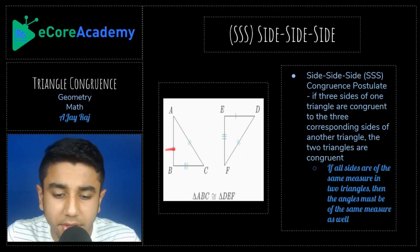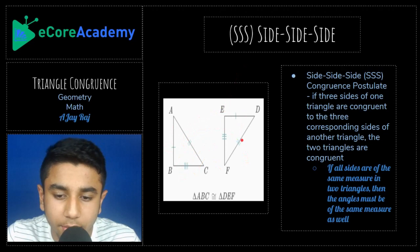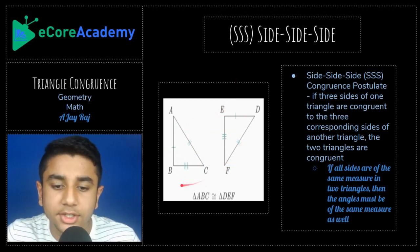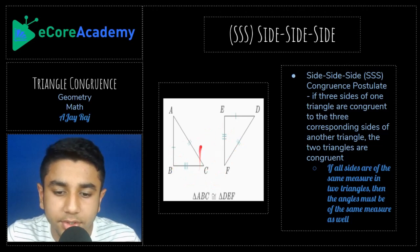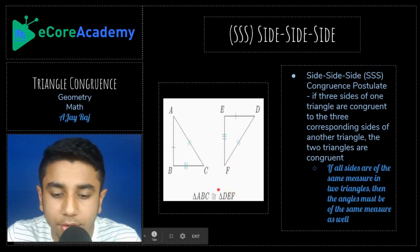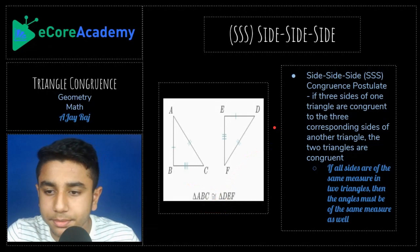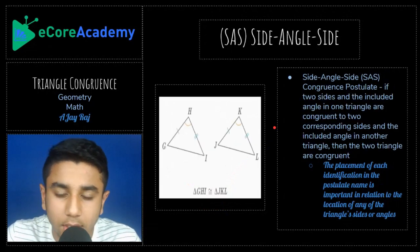The tick marks on the diagram represent congruence: one dash is congruent to the other triangle's one dash, two dashes to two dashes, and three dashes to three dashes. Since you have three different congruence statements here, these two triangles must be congruent, as indicated by the congruency sign.